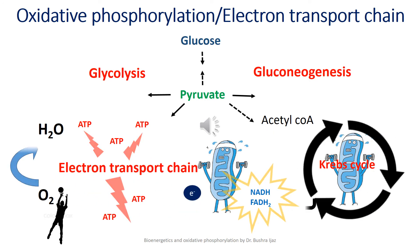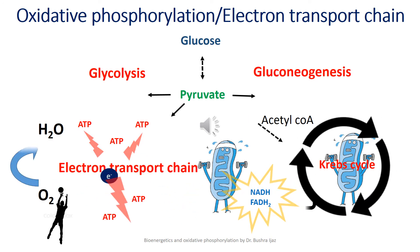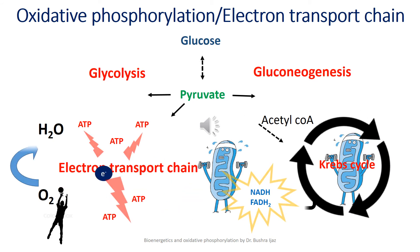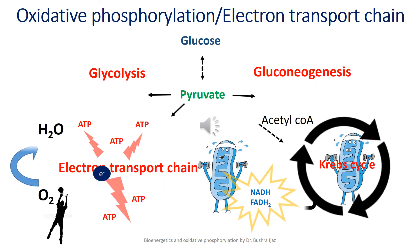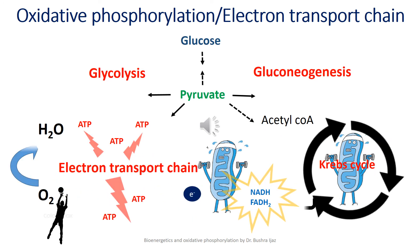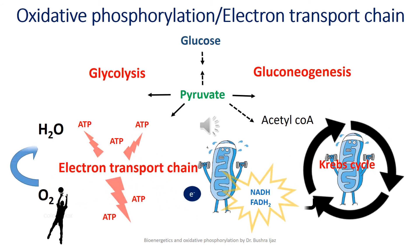Now let's talk about oxidative phosphorylation, commonly called the electron transport chain. Glucose undergoes glycolysis to become pyruvate; this pyruvate can be converted back to glucose by gluconeogenesis. The most common destination for pyruvate, however, is conversion into acetyl-CoA, which then enters the Krebs cycle or TCA cycle to generate NADH and FADH2 molecules. These NADH and FADH2 are incredibly important byproducts used in redox reactions that transfer electrons through oxidative phosphorylation to generate massive amounts of ATP.